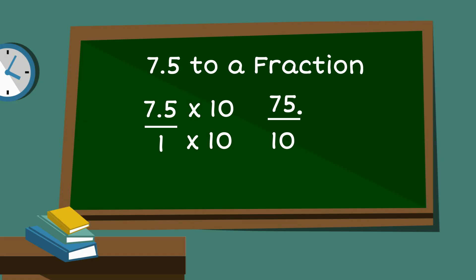We can simplify this because since 75 ends with a 5 it's divisible by 5, and 10 is divisible by 5. So 75 divided by 5 is 15, and 10 divided by 5 is 2. Now this fraction is simplified.